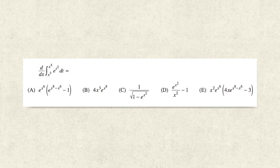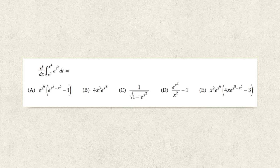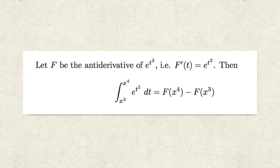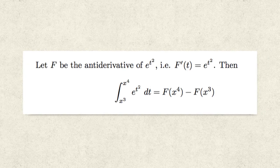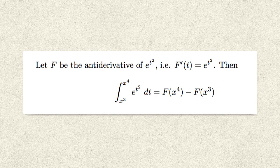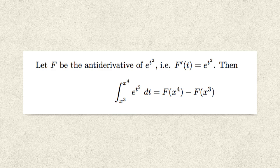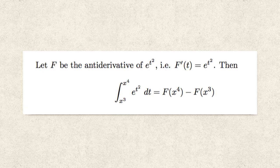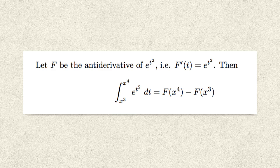So in order to start the problem, first we will introduce a general antiderivative for the function we are integrating, namely e to the t squared. So we start by letting F be the antiderivative of e to the t squared, or in other words the derivative of F with respect to t is e to the t squared. Then the integral from x cubed to x to the fourth of e to the t squared dt is F evaluated at x to the fourth minus F evaluated at x cubed.